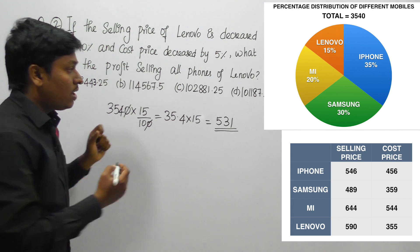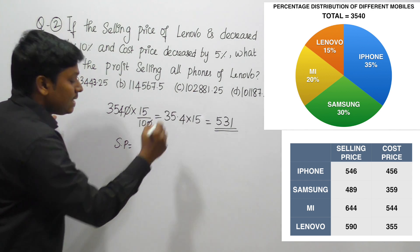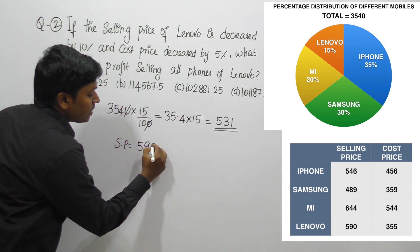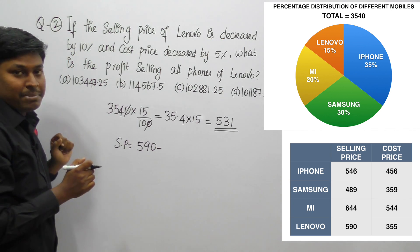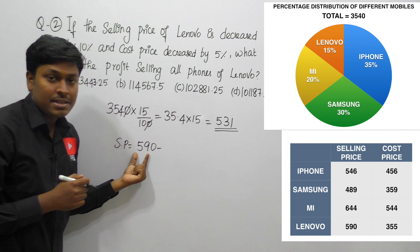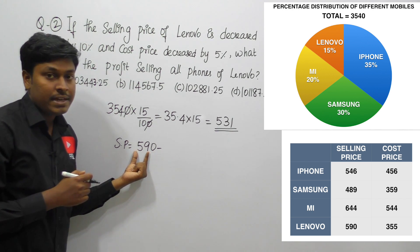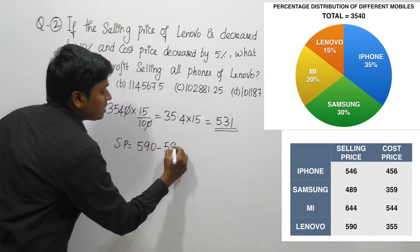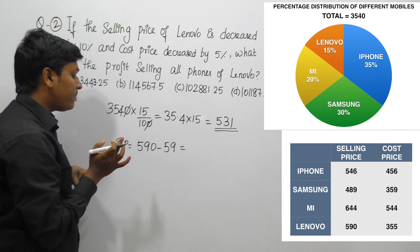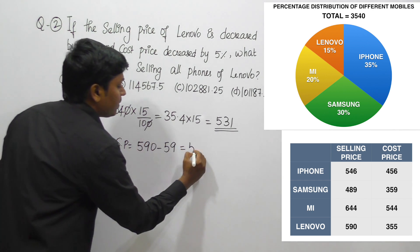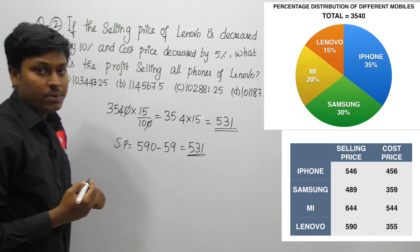The condition states that the selling price of Lenovo is decreased by 10%. The selling price of Lenovo is 590. 10% of 590 is 59, and since there is a decrease, we subtract: 590 − 59 = 531. So the new selling price of Lenovo is 531.